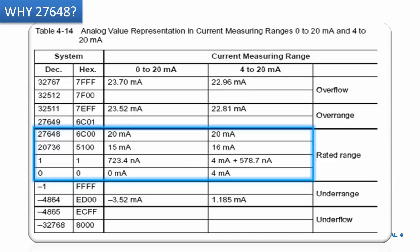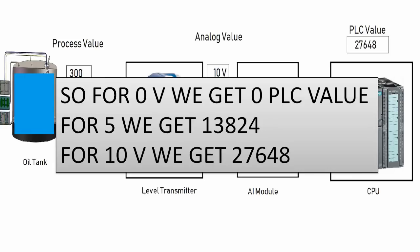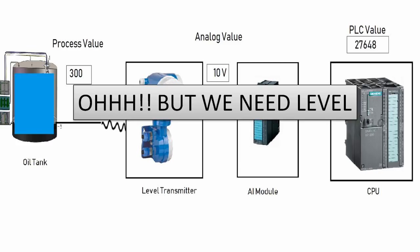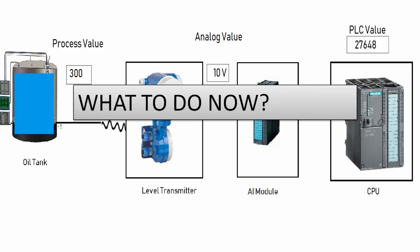For example, if there is a cut in the wire, you will understand it because the value will not come in the rated range. You will analyze that. If the value is exceeding — like a short circuit causing current more than 20 milliampere — that is overflow, and Siemens has reserved spaces to detect that. That's why we take only 85 percent of the total value. But this raw value — 0, 13824, or 27648 — is not the actual engineering value we're looking for, which is 0 to 300.